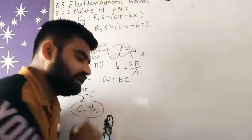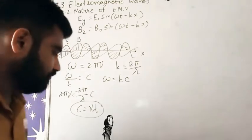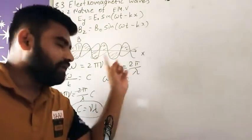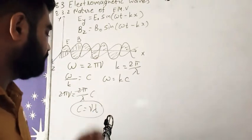So this is one relation. What is ν? ν is our frequency. And what is λ? λ is our wavelength of our electromagnetic wave.